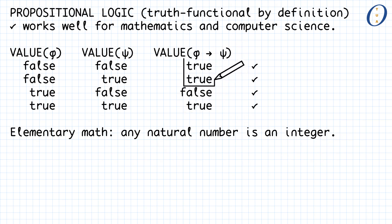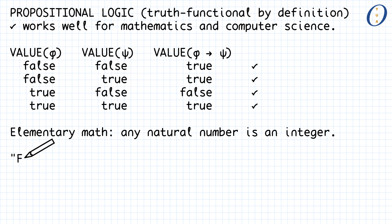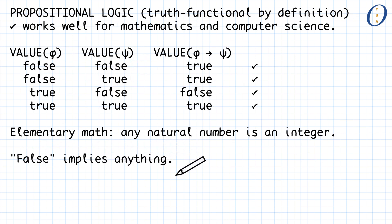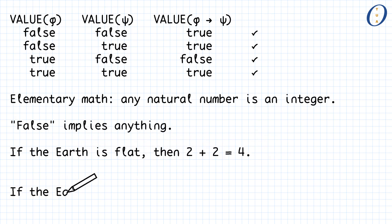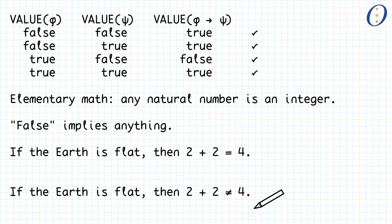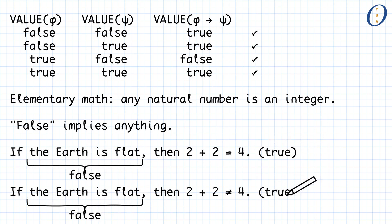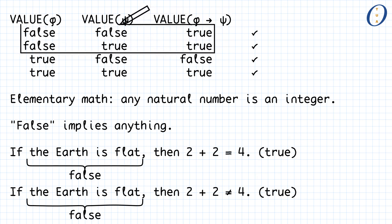The truth function associated to implication assigns the value true to any implication where the antecedent is false, independently of whether the consequent is true or false. This fact is often summarized under the slogan 'false implies anything,' meaning that false implies both true and false. This explains why the sentences 'if the earth is flat then 2 plus 2 is equal to 4' and 'if the earth is flat then 2 plus 2 is not equal to 4' are both considered to be true in propositional logic. As their antecedents are false, even if there is no causality relation between the earth being flat or not and arithmetic, each of the two implications must be true, according to the first two lines in the truth table.